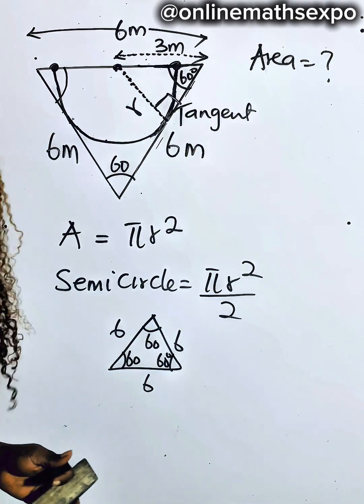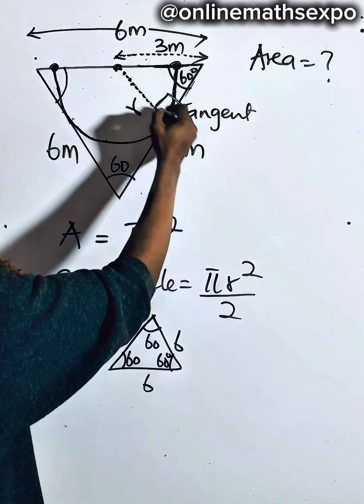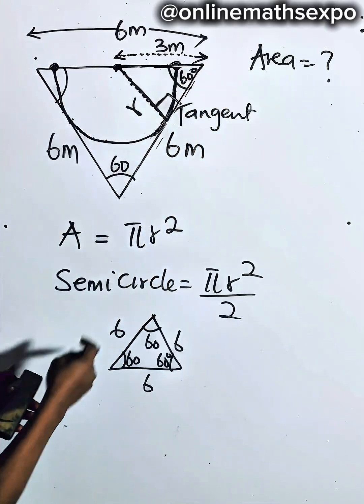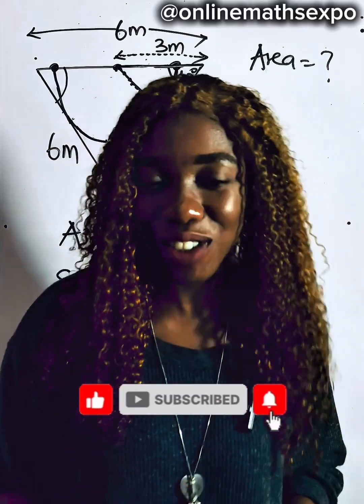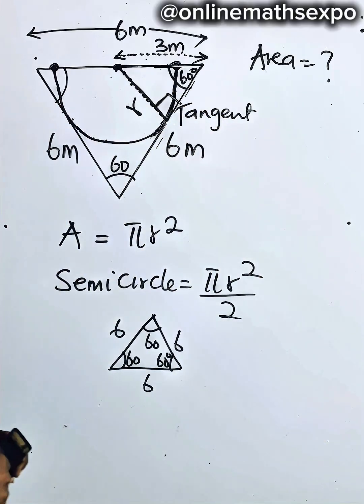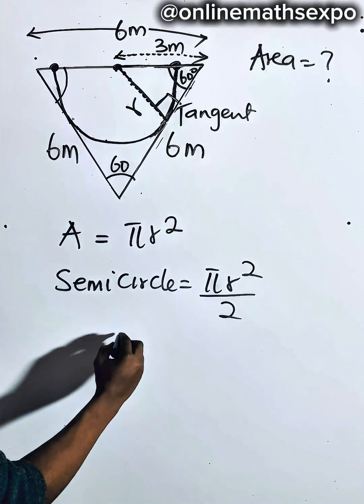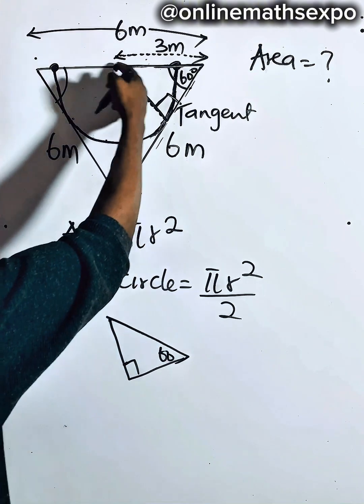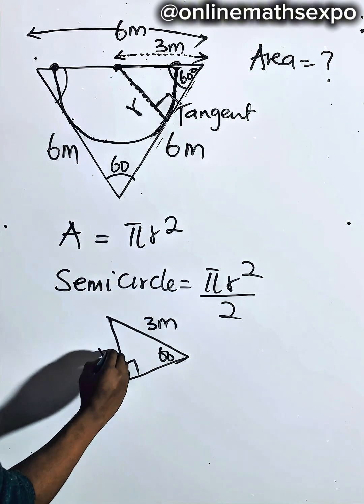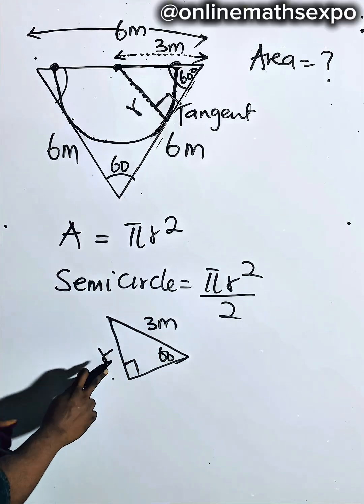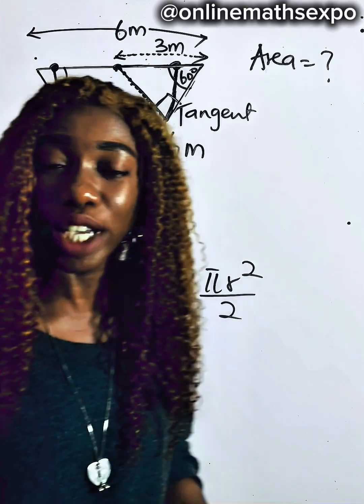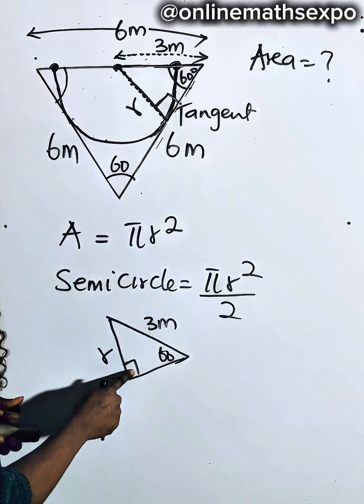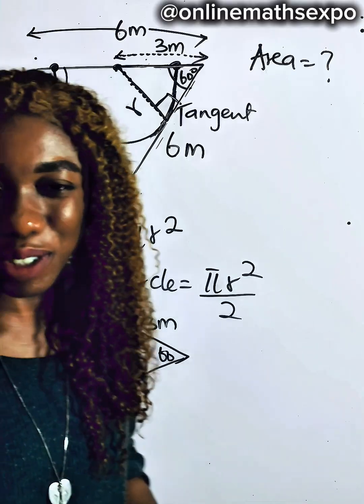We can now bring out the relevant right triangle from this shape. This right triangle has the 60-degree angle at the corner of the equilateral triangle, the adjacent side of 3 meters (half the base), and R as the opposite side, with the slant side as the hypotenuse. Since we are working with sides and an angle in a right triangle, we apply trig ratios — SOH CAH TOA.